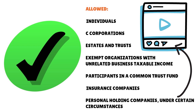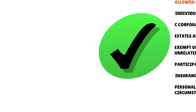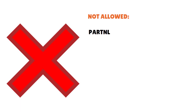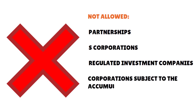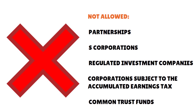What about the constituencies that are not allowed to deduct net operating losses? Partnerships are not allowed. S corporations are not allowed. Regulated investment companies are not allowed. Corporations subject to the accumulated earnings tax and common trust funds are also not allowed.